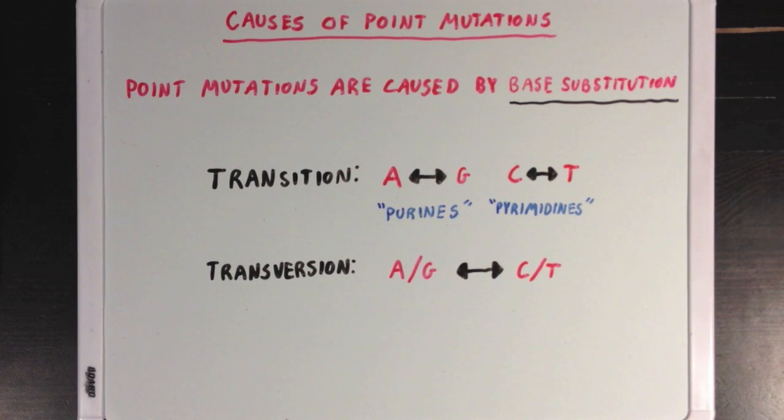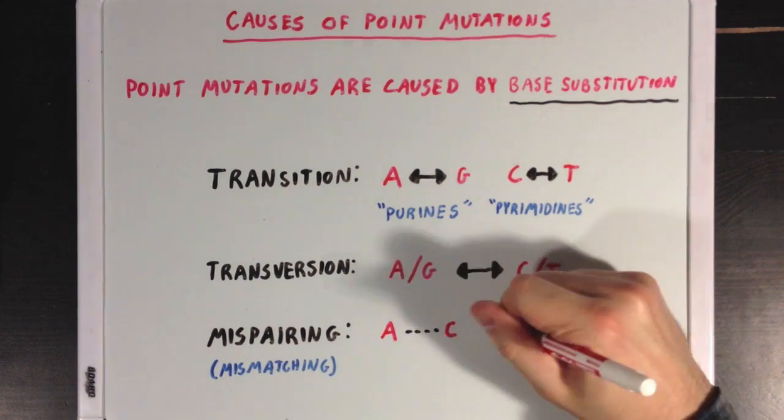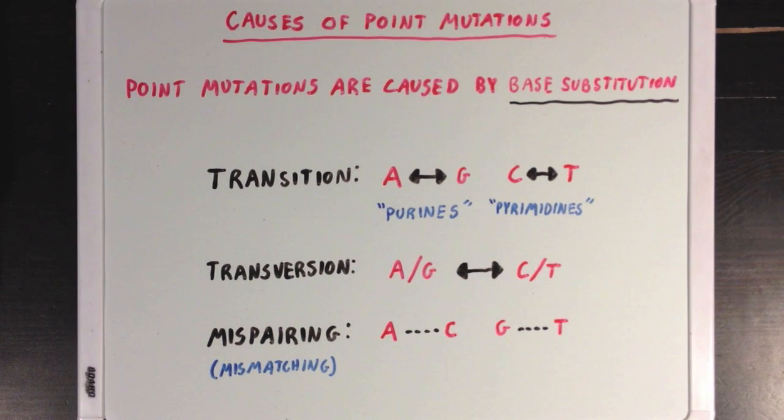Now the last kind of mutation that can lead to a point mutation is a mispairing, which some people call mismatching. And that's when a DNA strand has a non-Watson Crick base pairing. Normally, A pairs with T, and G pairs with C. But when you have a mispairing, that's when A and C pair up, or when G and T pair up. And it's much more common for mispairings to occur between a purine and a pyrimidine, as opposed to between two purines like A and G pairing up, or two pyrimidines like C and T pairing up.